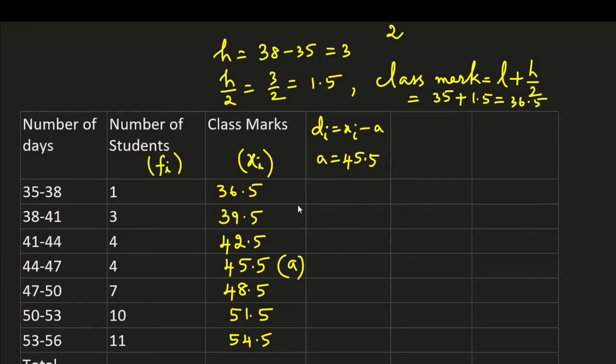So the first one we get 36.5 minus 45.5. We can take 36 minus 45. It is minus 9. Here 39.5 minus 45.5. Just we can take 39 minus 45. It is minus 6. Here it is minus 3.